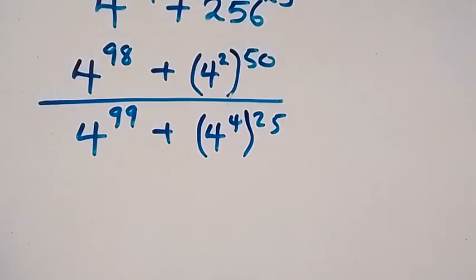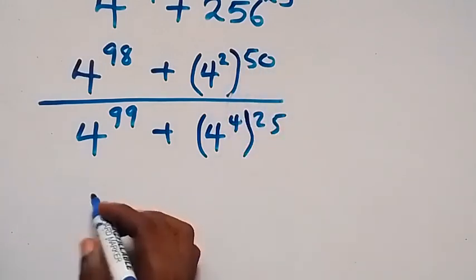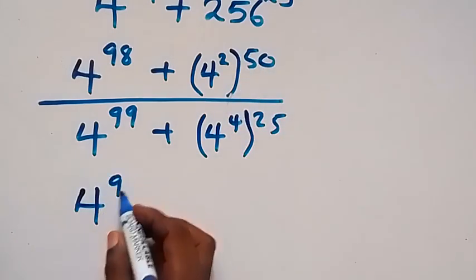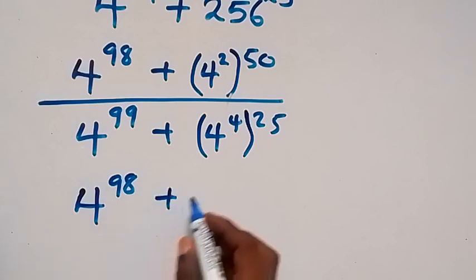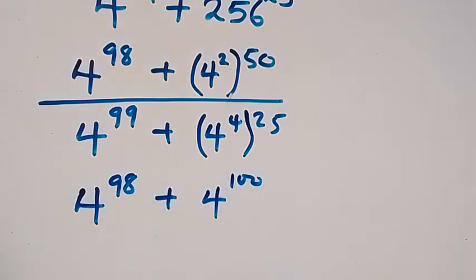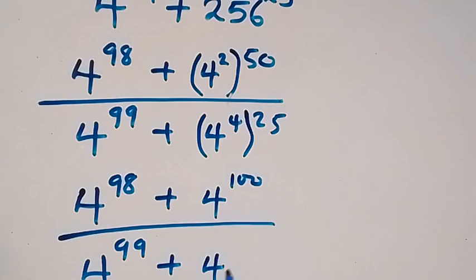In the next step we apply the law of indices — we multiply the powers. We get 4 raised to power 98, plus 4 raised to power 100 (since 2 times 50 is 100), divided by 4 raised to power 99, plus 4 raised to power 100 (since 4 times 25 is 100).